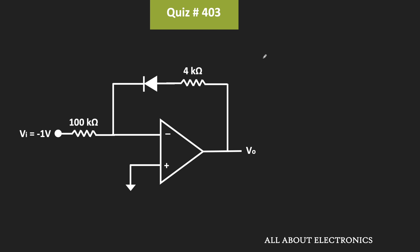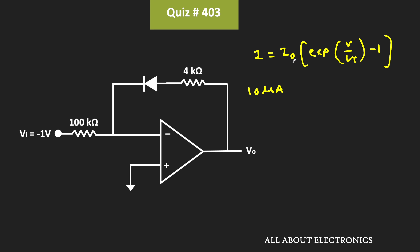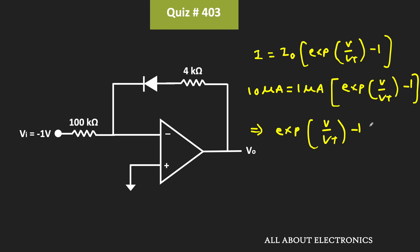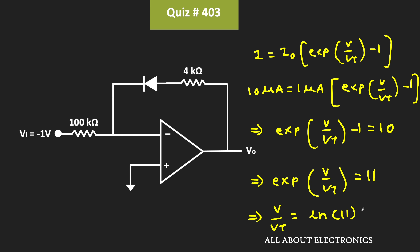To find Vd, we use the expression for the IV characteristic of the diode. The current through the diode I is equal to I0 times (e to the power Vd/Vt − 1). The current through the diode is 10μA, and we know I0 = 1μA and Vt = 25mV. So: 10μA = 1μA × (e^(Vd/Vt) − 1), which gives e^(Vd/Vt) − 1 = 10, or e^(Vd/Vt) = 11. Taking the natural log of both sides: Vd/Vt = ln(11), which is roughly equal to 2.4.